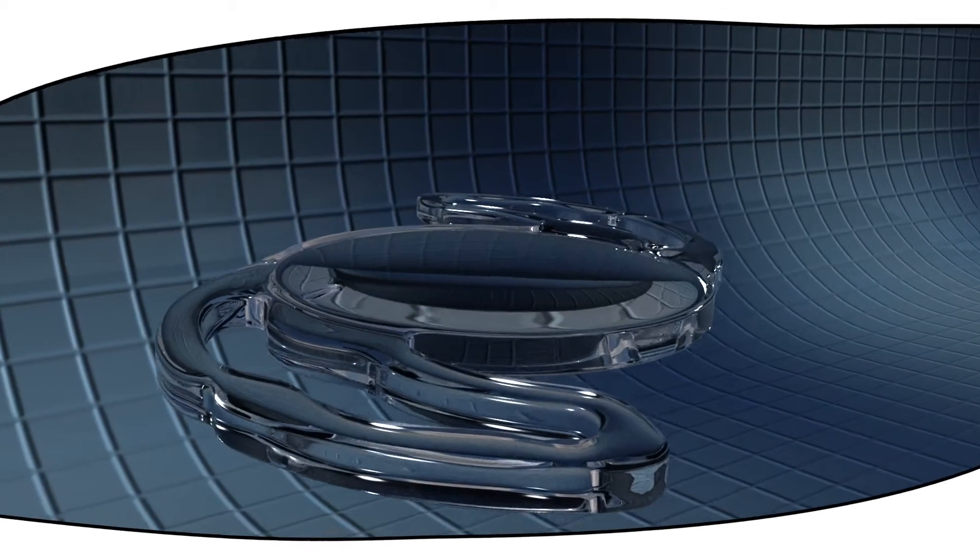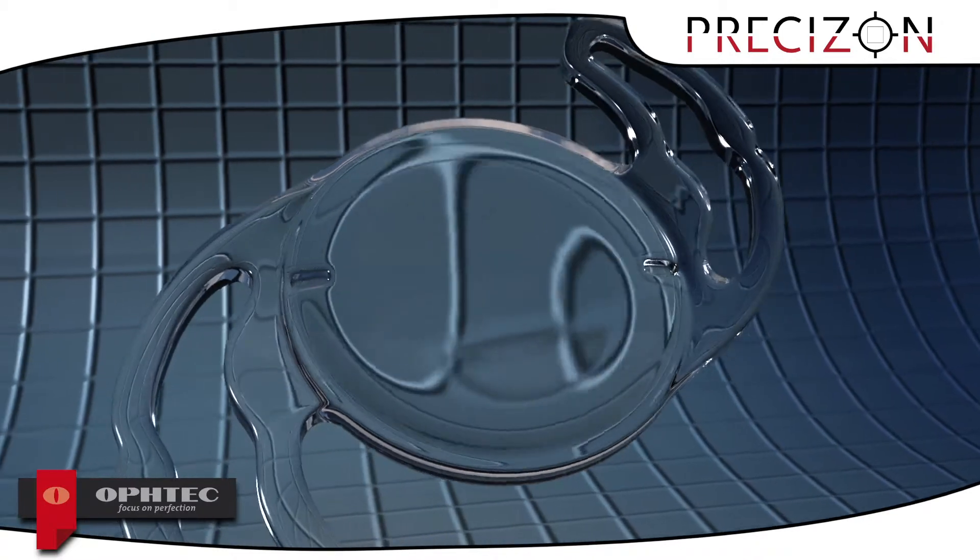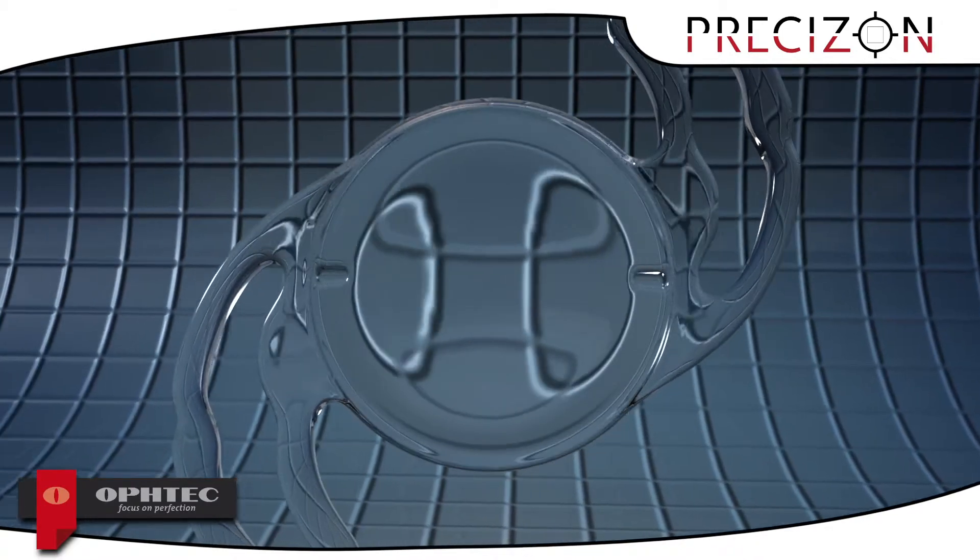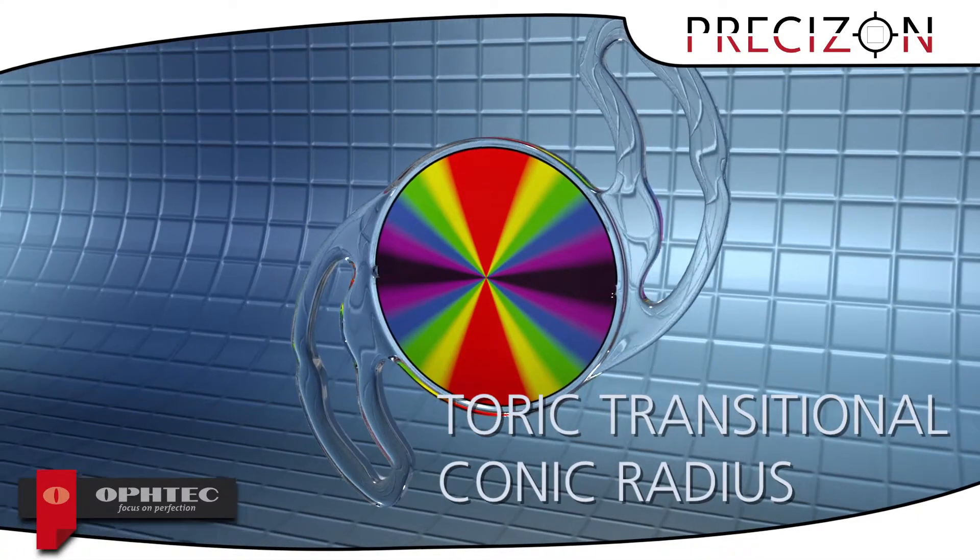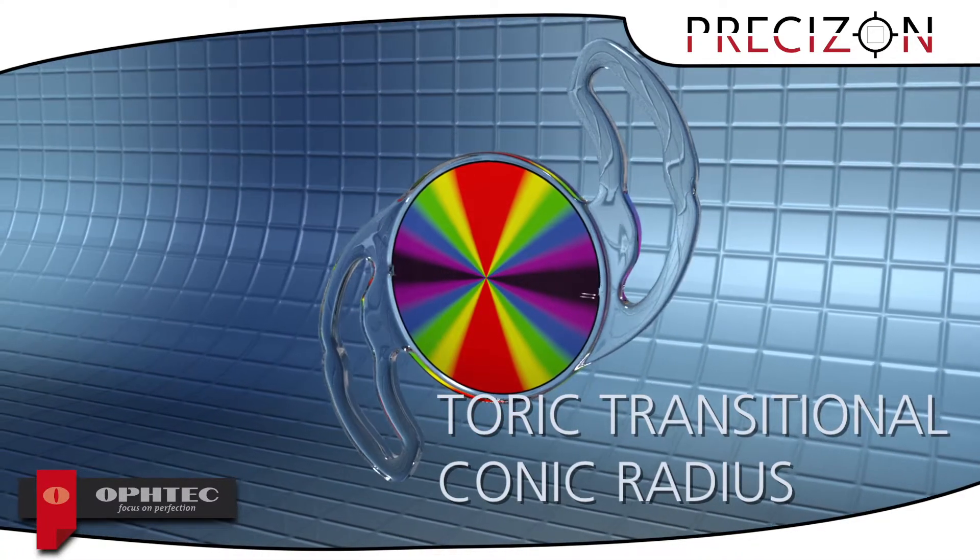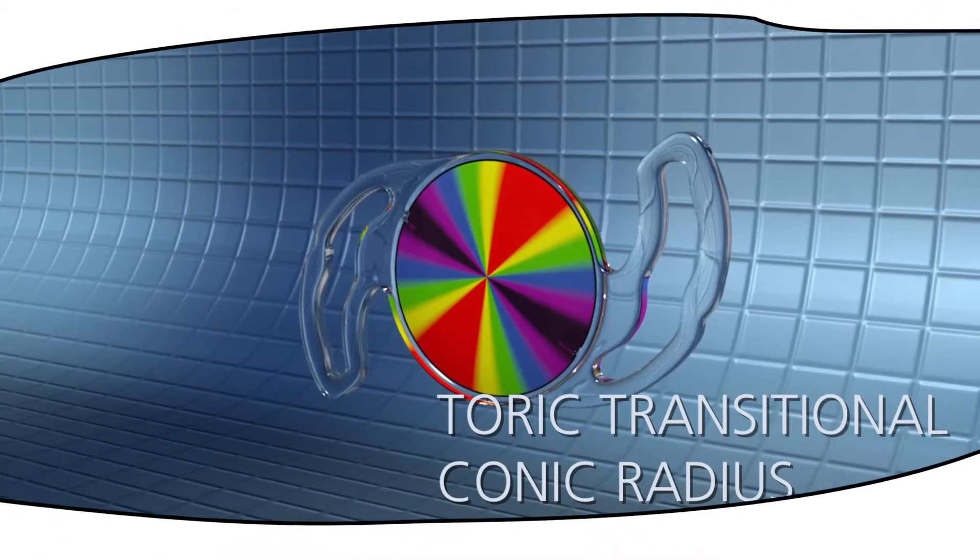To overcome this shortcoming of standard Toric IOLs, Oftec has developed and patented a unique solution: Precizon Toric Transitional Conic Radius. Precizon Toric is significantly more tolerant to misalignment and therefore is more forgiving.